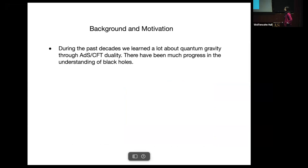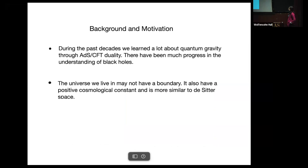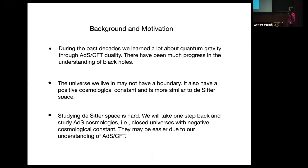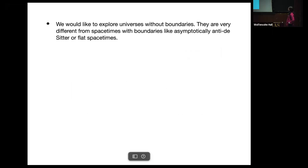Some background and motivation. During the past decades, we learned a lot about quantum gravity through ADS-CFT duality, and there has been much progress in understanding black holes. However, the universe we live in may not have a boundary — it also has a positive cosmological constant and is more similar to de Sitter space. Studying de Sitter space is hard, so we will take one step back and study ADS cosmology: closed universes with negative cosmological constant. They might be easier to study due to our understanding of ADS-CFT. We would like to explore universes without boundaries.